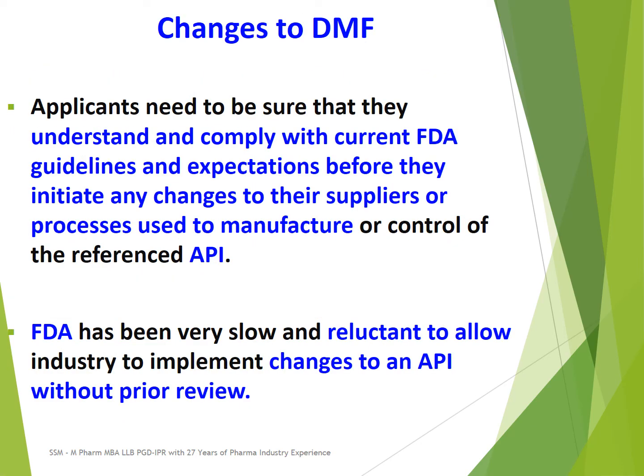Coming to changes to DMF: applicants need to be sure that they understand and comply with current FDA guidelines and expectations before they initiate any changes to their suppliers or changes to processes used for manufacturing or quality control of the referenced API. FDA has generally been very slow and reluctant to allow industry to implement changes to API without prior review by FDA.